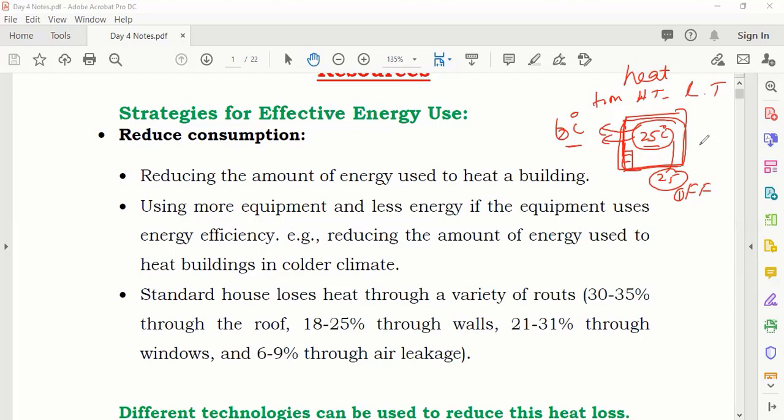But if your house is releasing the heat outside, so the temperature of the room again starts to decrease. Maybe after some time, it will become 10 degrees Celsius again. And again, you need a heater to make it 25. So by this way, the energy is wasted. So what you have to do, you have to stop this heat loss. So how we will stop that one, we will see now.